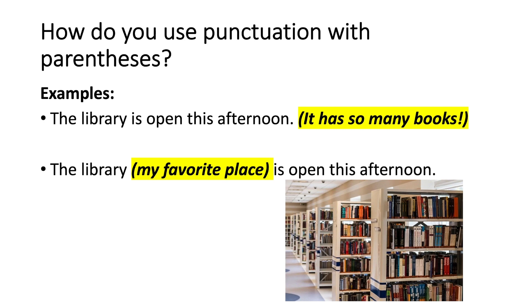The next sentence: 'The library (my favorite place) is open this afternoon.' 'My favorite place' is not a complete sentence, so there is no punctuation inside the parentheses — you only have the punctuation at the end of the sentence. And by the way, did you notice I said 'library'? Please learn how to pronounce it correctly — it is one of the most often mispronounced words. You'll hear very educated people on TV say 'libary,' but make sure you say 'library.' That's just a pet peeve of mine.